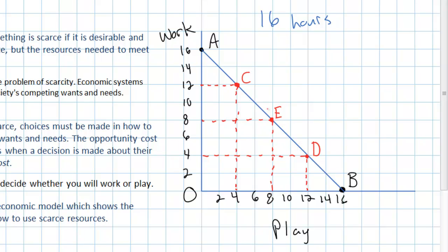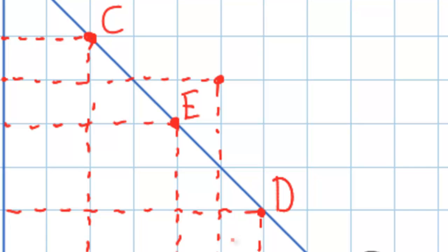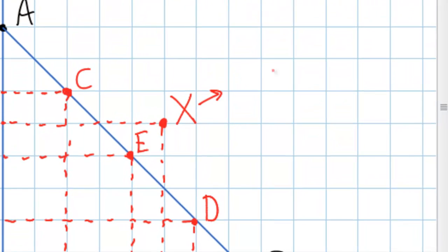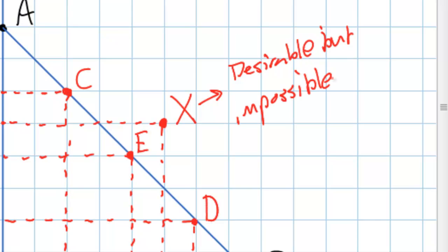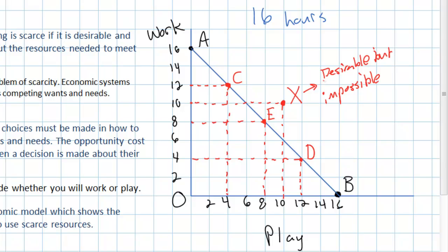But what if an individual wished to spend 10 hours working and also 10 hours playing? Such a combination lies beyond the individual's production possibilities curve — we'll call that point X. To have 10 hours to work and 10 hours left over for play is clearly desirable, but given the 16-hour day it is impossible. A point beyond an individual's, nation's, or business's production possibilities curve is not possible — that's the whole point of the curve. It shows what is possible in our use of scarce resources between two competing wants and needs.